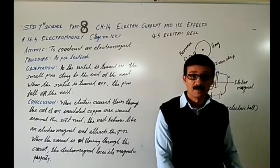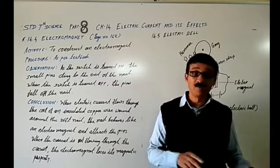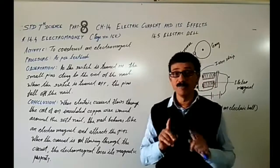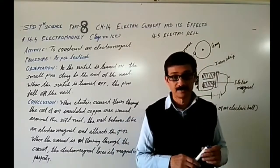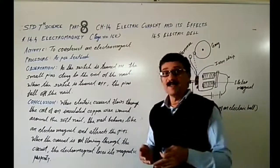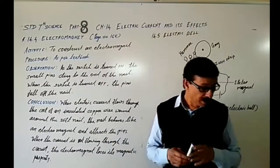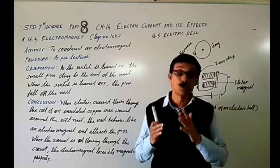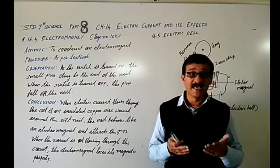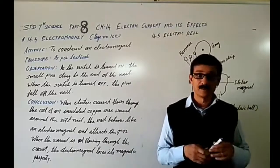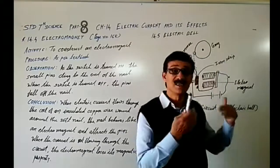In the last part, in the beginning of this chapter, we came to know that one of the effects of electric current was the heating effect. Then we came to know another effect — what happens when the current flows through a wire, that wire behaves like a magnet.